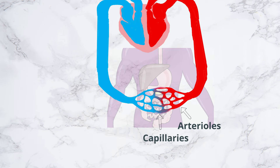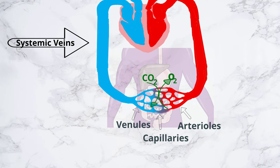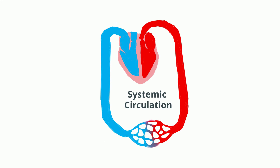Exchange of nutrients and gases occurs across thin capillary walls. Blood unloads oxygen and picks up carbon dioxide and enters a systemic venule. Venules carry deoxygenated blood away from tissues and merge to form larger systemic veins. Ultimately, the blood flows back to the atrium. This pathway constitutes the systemic circulation.